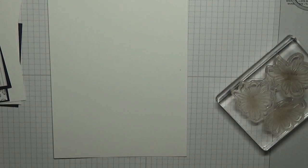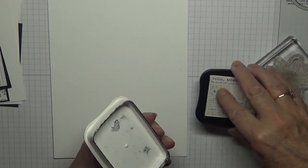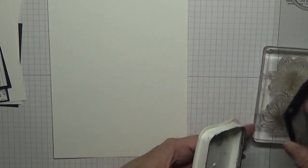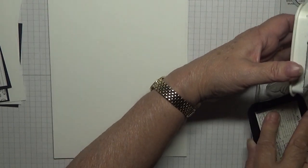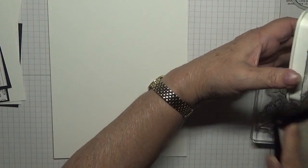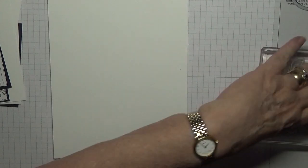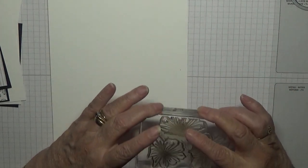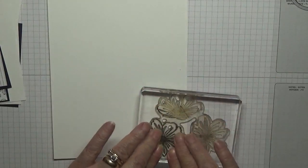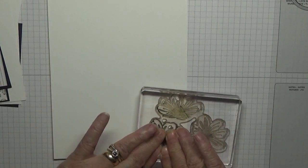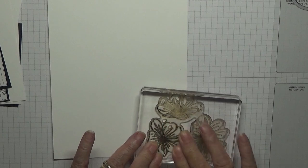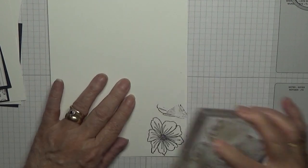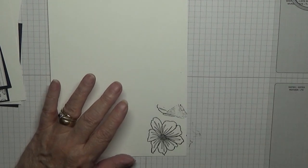Because the die cuts out three flowers and I don't want all the flowers, we're just going to have one stamp and that's that one, and we'll fussy cut that out.